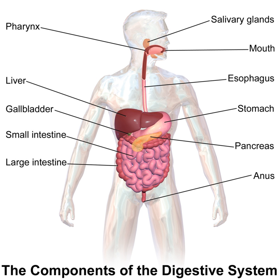In the human digestive system, food enters the mouth and mechanical digestion of the food starts by the action of mastication — chewing, a form of mechanical digestion — and the wetting contact of saliva. Saliva, a liquid secreted by the salivary glands, contains salivary amylase, an enzyme which starts the digestion of starch in the food.